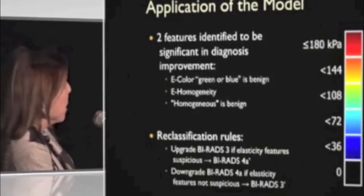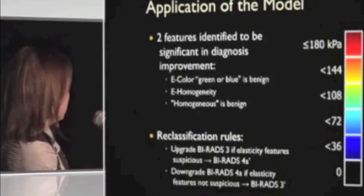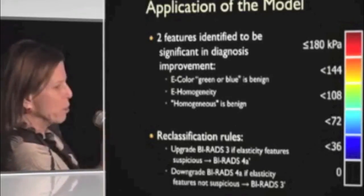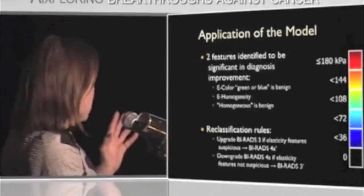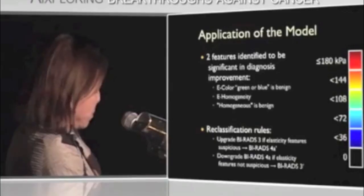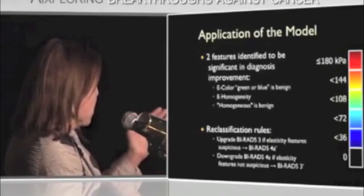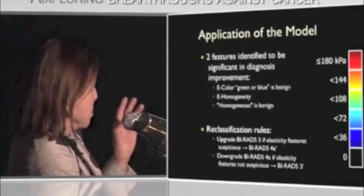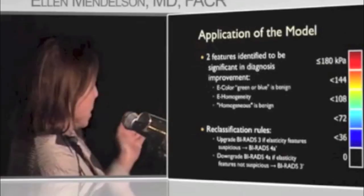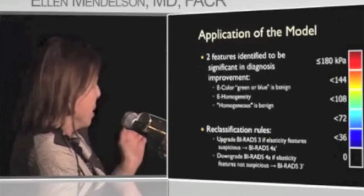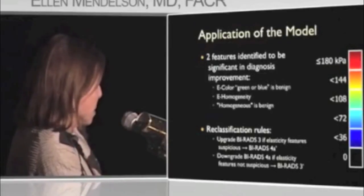The two features independently identified to be significant in diagnosis, as seen on the ROC curves, are e-color — green or blue is benign — and e-homogeneity — homogeneous is benign. The reclassification rules: you upgrade a BI-RADS 3 if elasticity features are suspicious, so it would go to 4A prime. A downgrade to BI-RADS 4A: if the elasticity features are not suspicious, you go down to BI-RADS 3 prime.